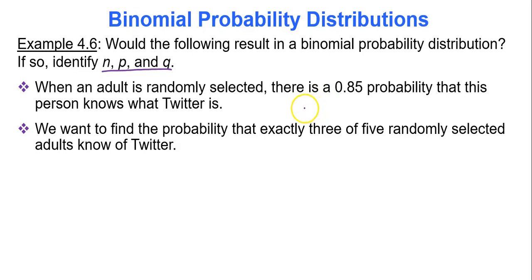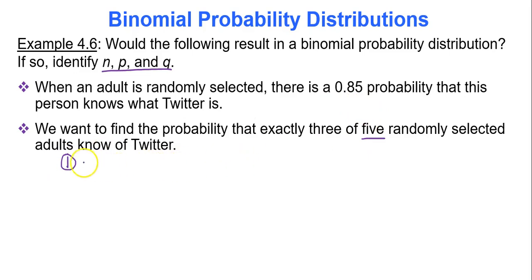We need to run through the four conditions. Condition one: is there a fixed number of trials? Yes — it says five randomly selected adults, so there are five trials.